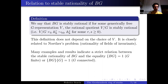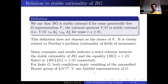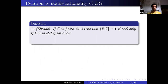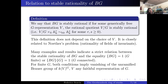For finite G, both conditions — [BG] = 1 and stable rationality — imply vanishing of the unramified Brauer group of k(V/G), where V is any faithful representation of G. This was perhaps the first indication by Ekedahl that the unramified Brauer group detects triviality of the class of BG. This prompted a question from Ekedahl on whether the two properties are always related.